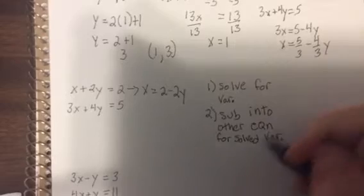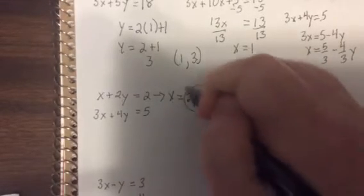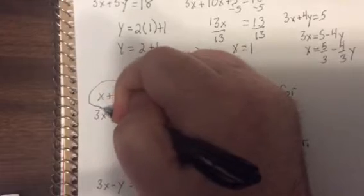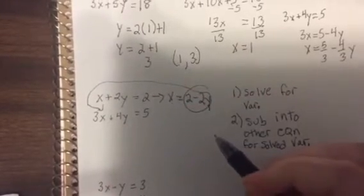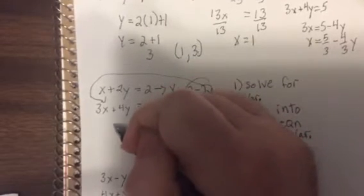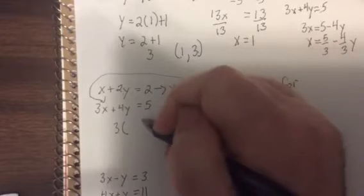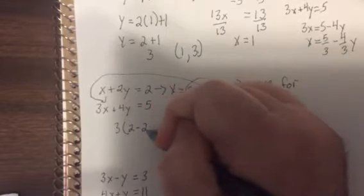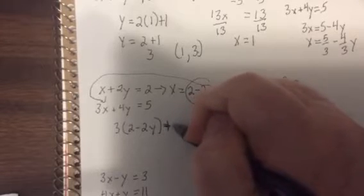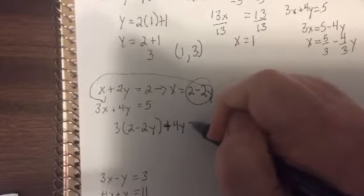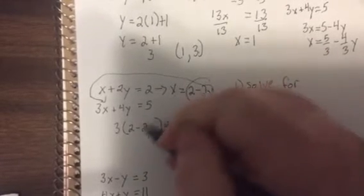Substitute into the other equation for solved variable. So, I solved for the x. So I'm going to put this in for the other equation. Has to be the other equation. Don't put it in the same equation. You're going to just mess. We don't want to mess. So we would have three parentheses, because I'm replacing the x with this. 2 minus 2y, oh, plus 4y. Almost lost the 4y. Bad, Murphy.